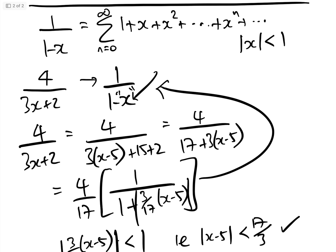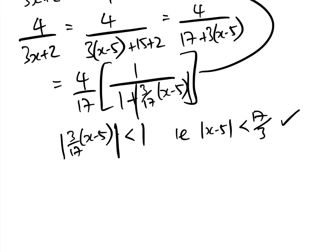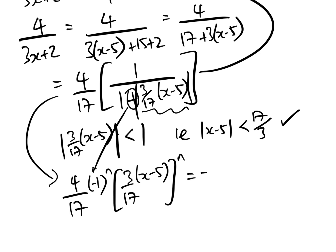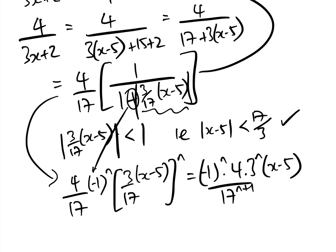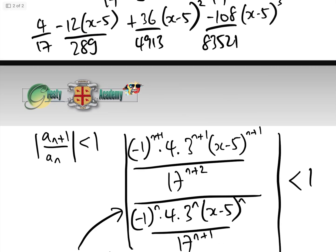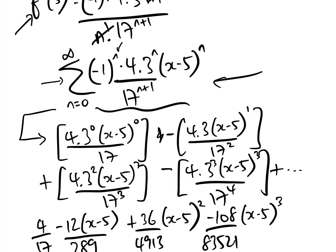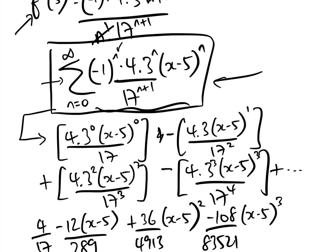As a matter of interest, we can also extract the general term directly from this. The general term is 4 seventeenths times minus 1 to the n times (3 over 17 times (x minus 5)) to the n, which equals minus 1 to the n times 4 times 3 to the n over 17 to the n plus 1 times (x minus 5) to the n — exactly the same general term we found via the Taylor series expansion.